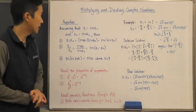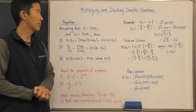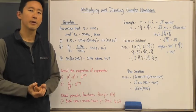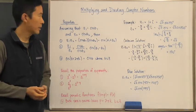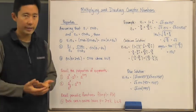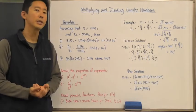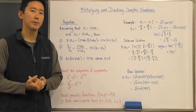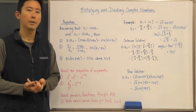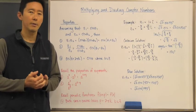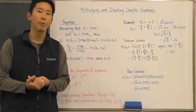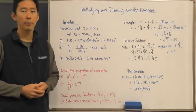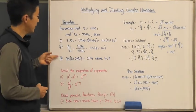Let's take a look at multiplying and dividing complex numbers. We already know how to do this in Cartesian form, but we also want to be able to multiply and divide complex numbers when they are in their polar form. We're going to take a look at three properties.